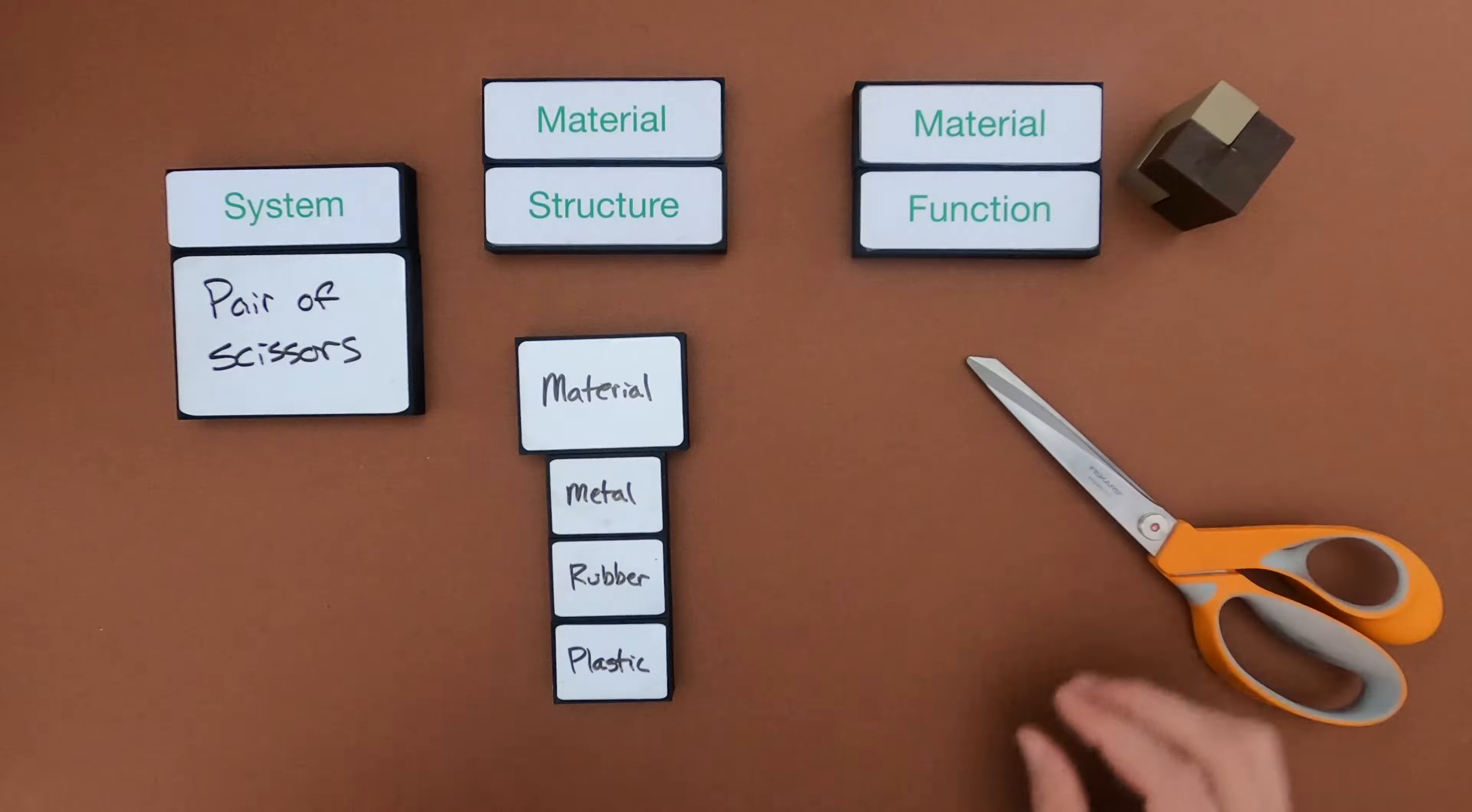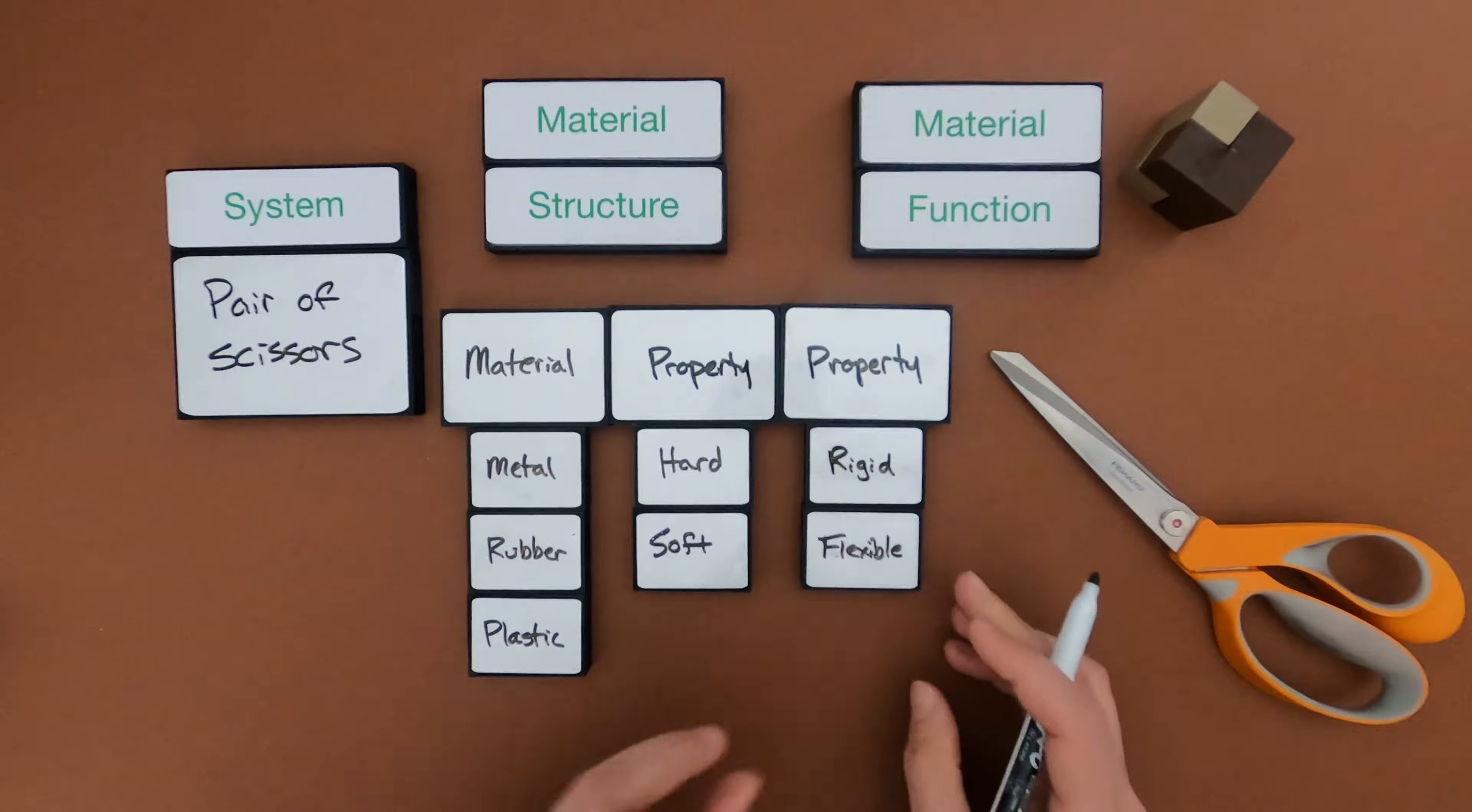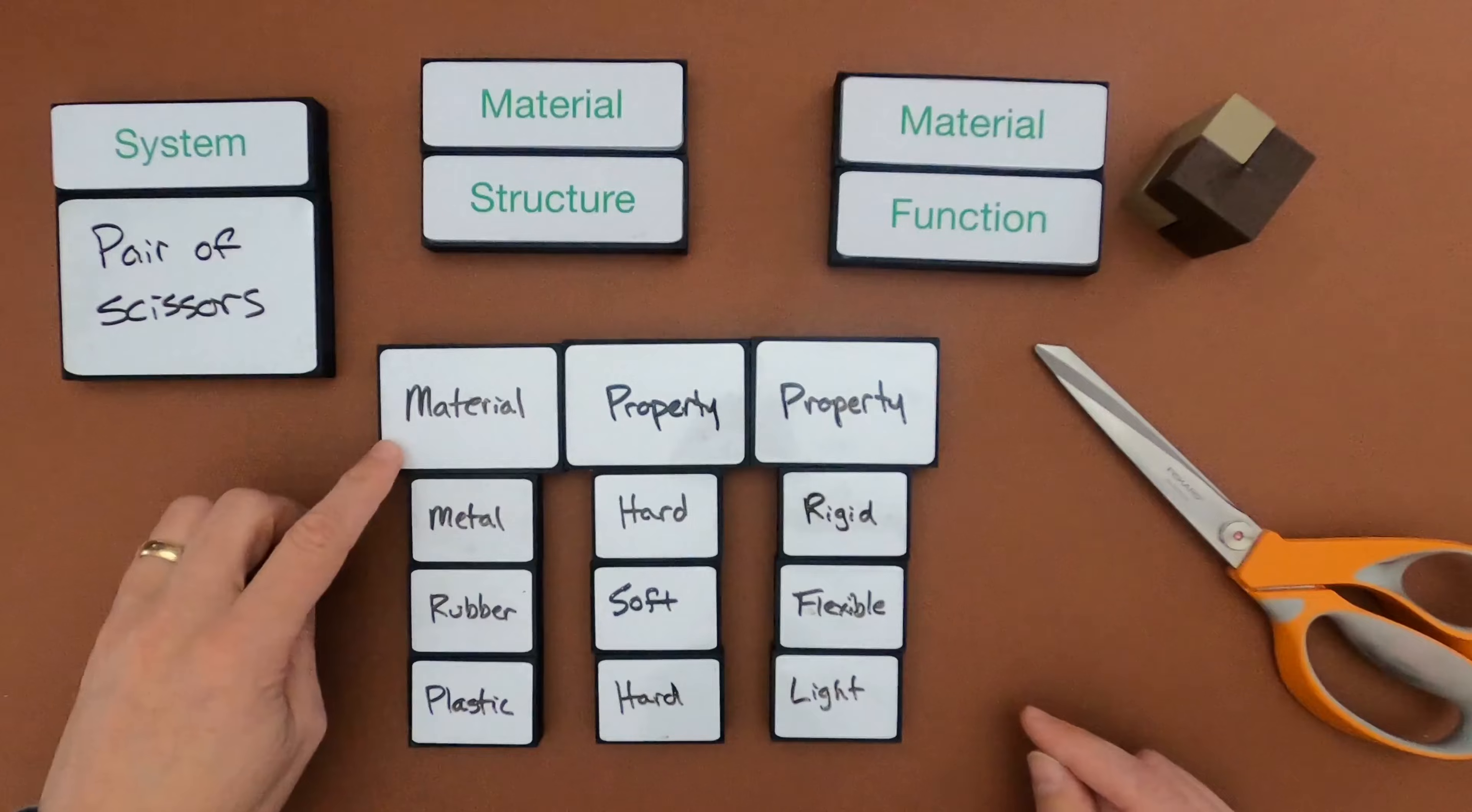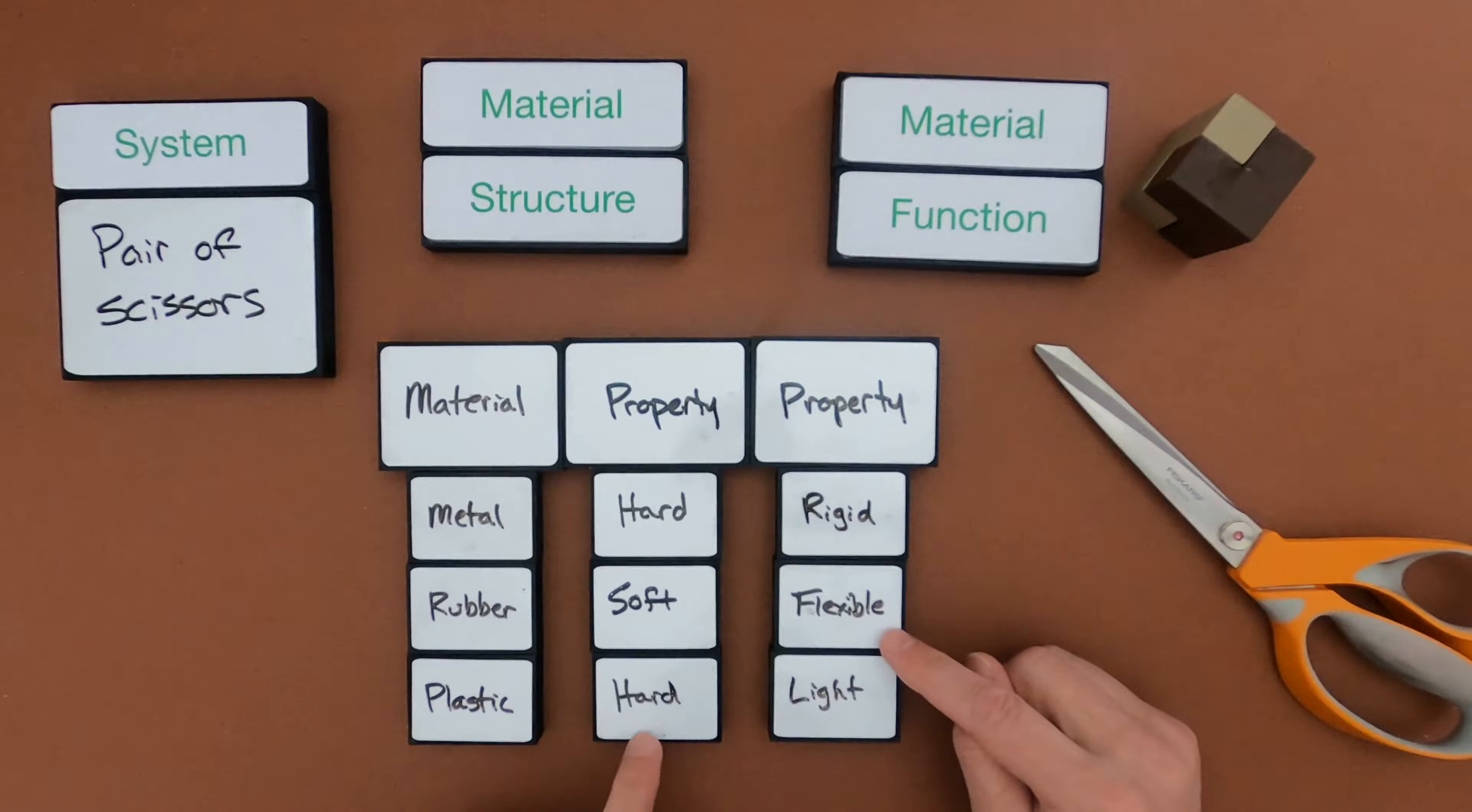The next thing we want to do is identify what are the properties. And so let me get some properties that correspond with these materials. So if we think about some of the properties for these materials, metal is very hard and it's rigid. The opposite of rigid would be flexible, which we would find in rubber, which is soft and flexible, and then plastic is hard and it's light.